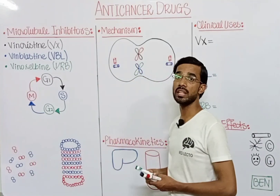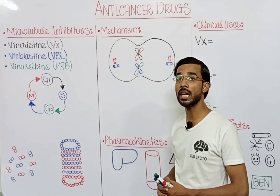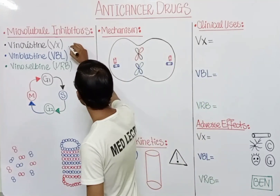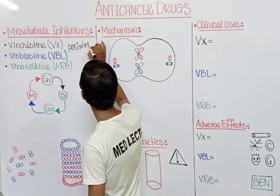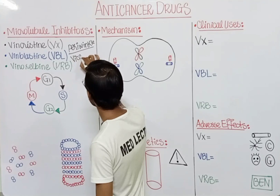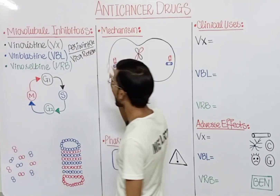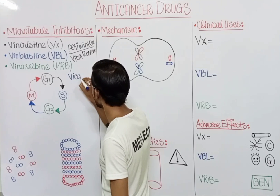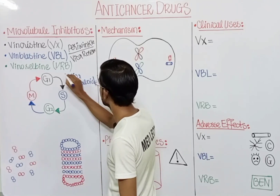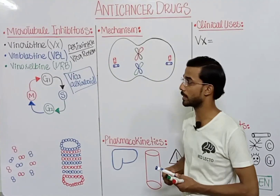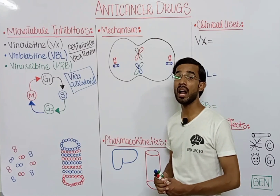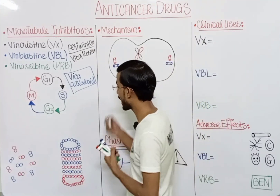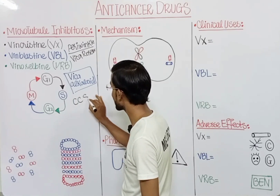These three drugs are derived from the plant called Periwinkle, or you can say Vinca rosea. That is why these drugs are called Vinca alkaloids. Vincristine, Vinblastine, and Vinorelbine are all Vinca alkaloid drugs. These drugs are cell cycle specific drugs — they act at a specific phase of the cell cycle.